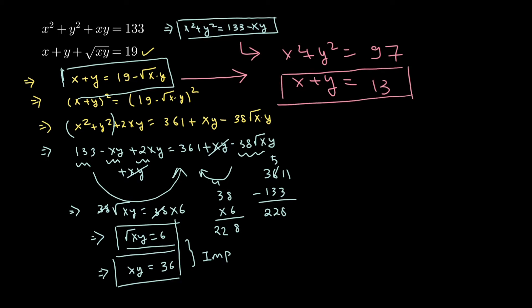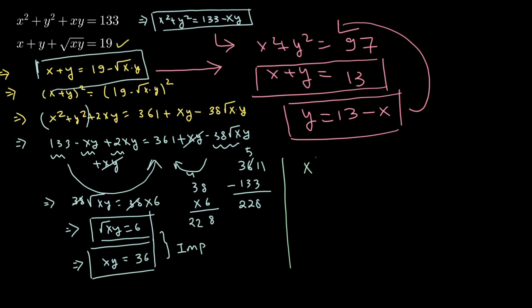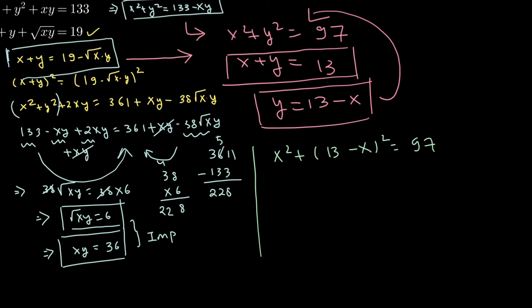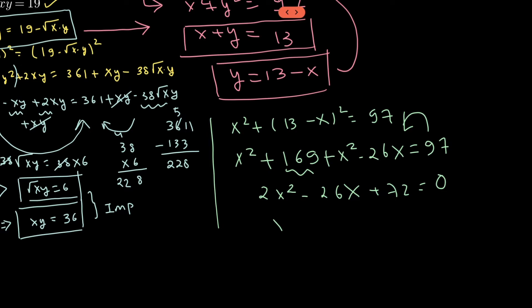From x + y = 13, we get y = 13 − x. Substituting into x² + y² = 97: x² + (13 − x)² = 97. Expanding: x² + 169 + x² − 26x = 97. Combining: 2x² − 26x + 169 − 97 = 0, which gives 2x² − 26x + 72 = 0.